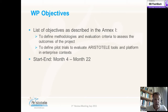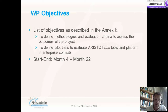The objectives of Work Package 9 are to define methodologies and evaluation criteria to assess the outcomes of the project. This is quite important because if an assessment is done in a sound way, the improvement cycles can result in an improved tool and platform of Aristotle that is more usable by potential users. Secondly, to define pilot trials to evaluate Aristotle tools and platform in enterprise contexts.